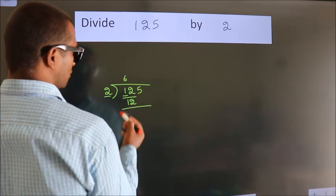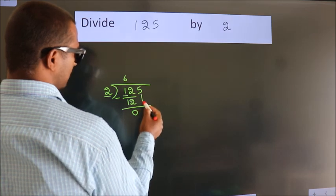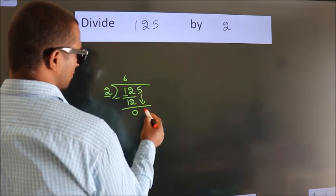Now we should subtract. We get 0. After this, bring down the beside number. So 5 down.